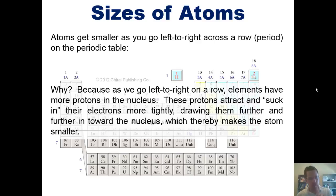But as I go from left to right across the periodic table, each element has one more proton than the element that preceded it. That proton in the nucleus attracts and sucks in the electrons more tightly, which draws them further in toward the nucleus, and thereby makes the atom smaller.